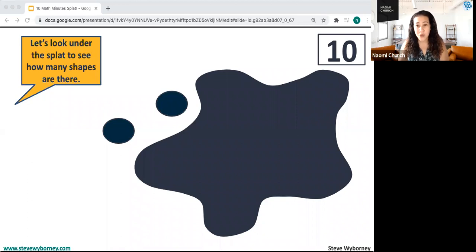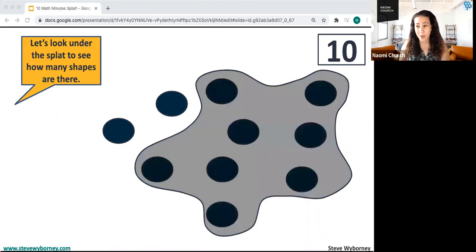And then we invite students to look under the splat. So let's look under the splat to see how many shapes there are. And then the splat grays out so we can see through it and think further.